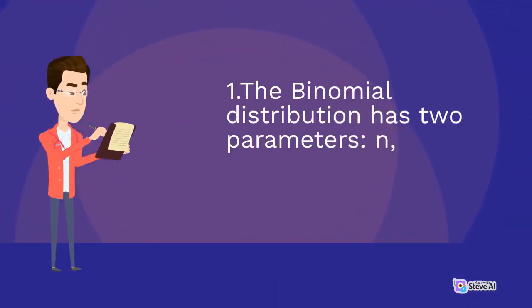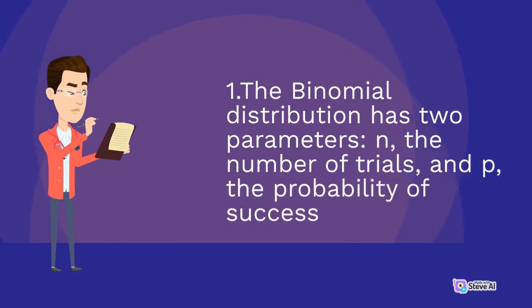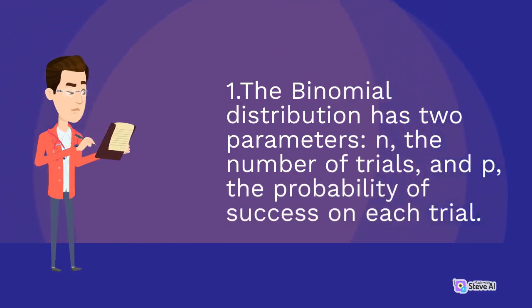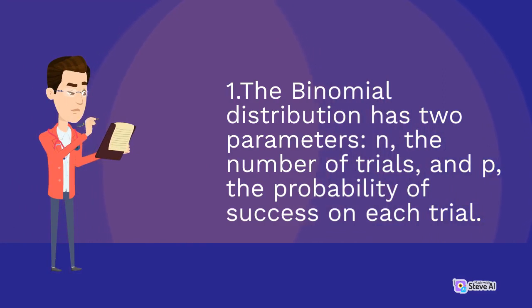1. The binomial distribution has two parameters: n, the number of trials, and p, the probability of success on each trial.